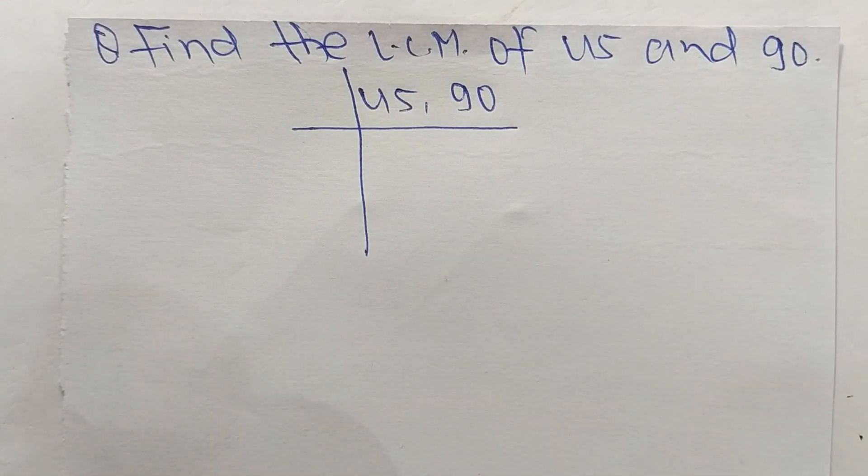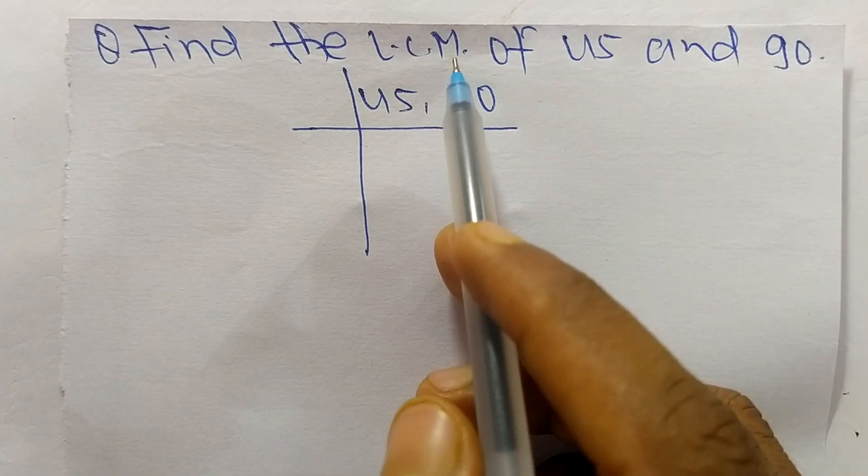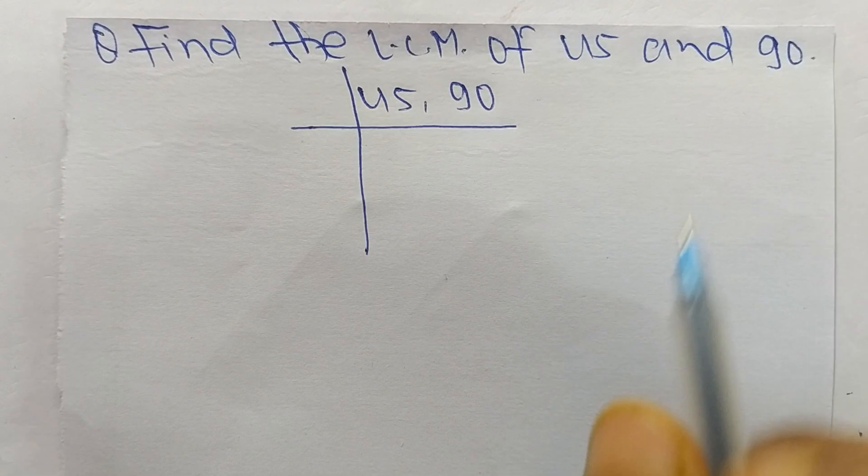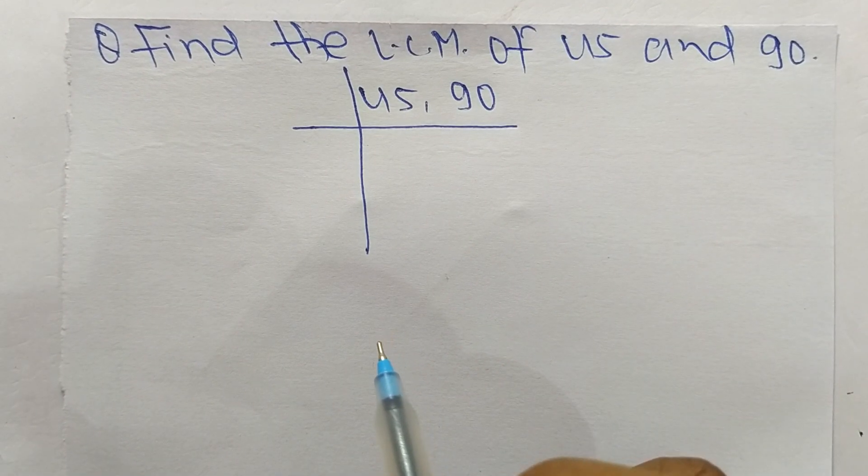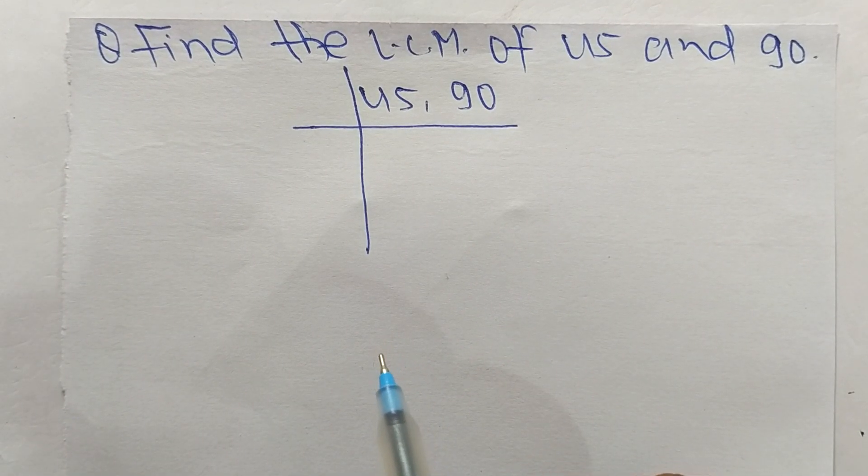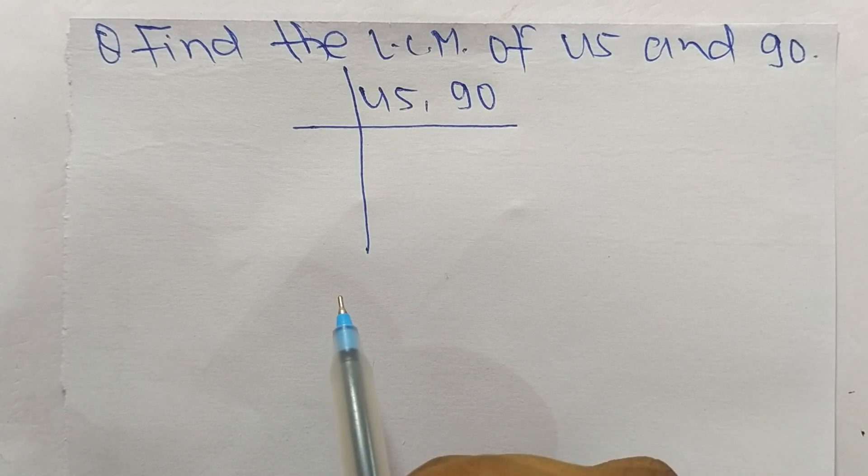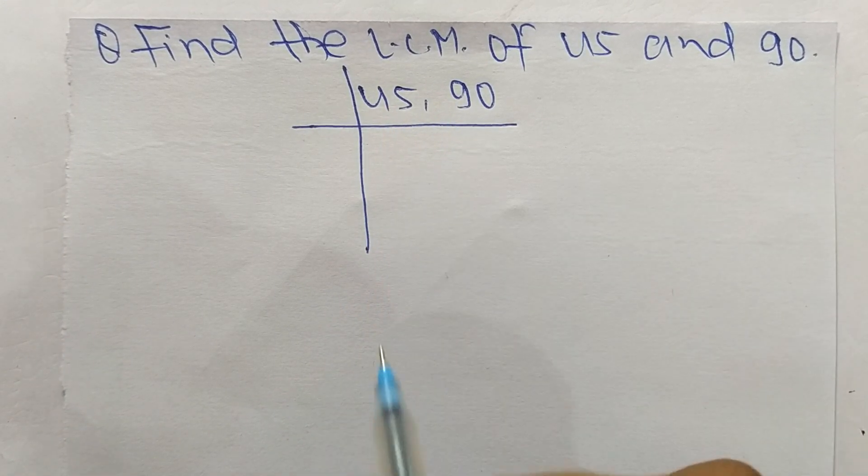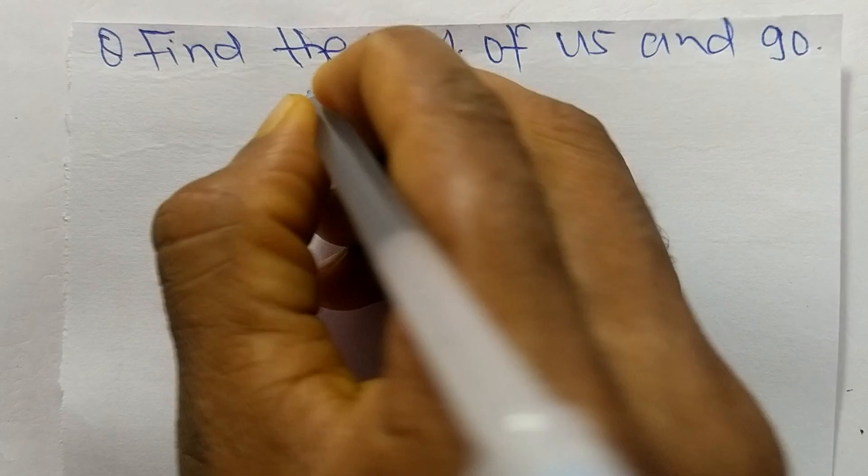Today in this video we shall learn to find the LCM of 45 and 90. To find the LCM, first we choose the lowest number that can exactly divide 45 and 90, so the number is 3.